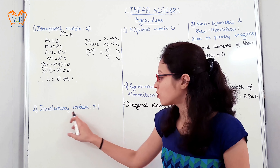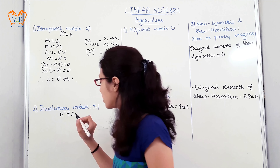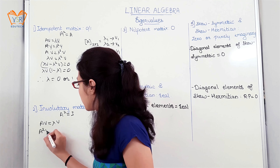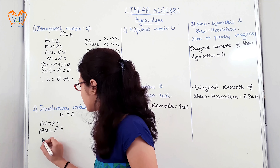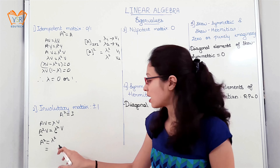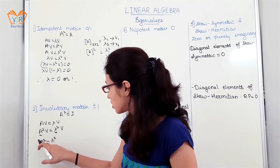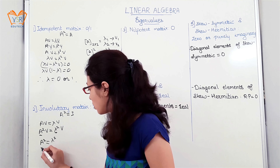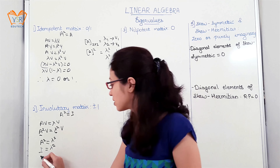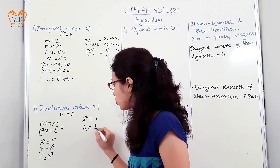Second, the eigenvalues for an involutory matrix are ±1. We know the definition: A squared equals I. Again we will take the same equation for the proof. Squaring, we get A squared equals λ squared. Since A squared equals I, we have λ squared equals I. We know that the eigenvalue of the identity matrix is 1, so λ squared equals 1, giving λ equals ±1.